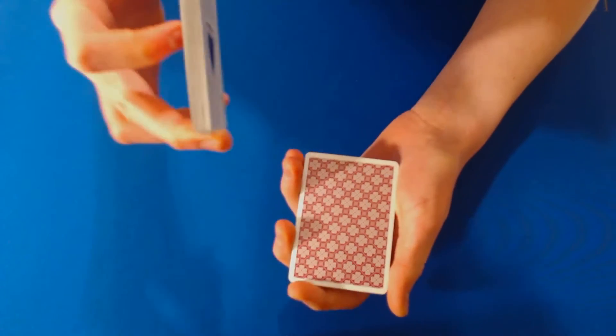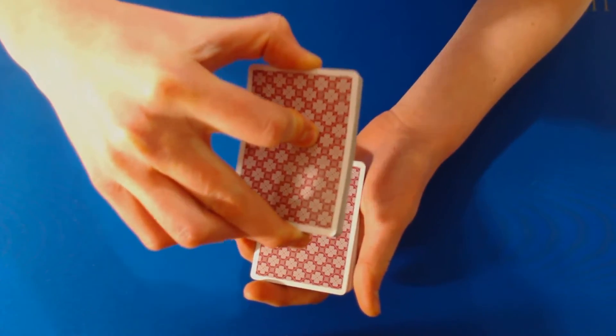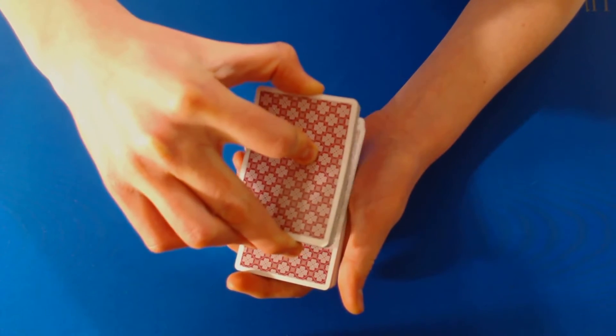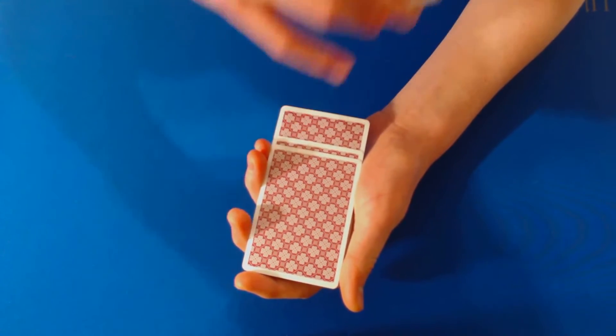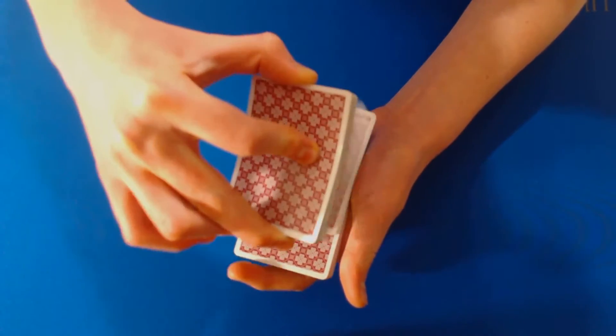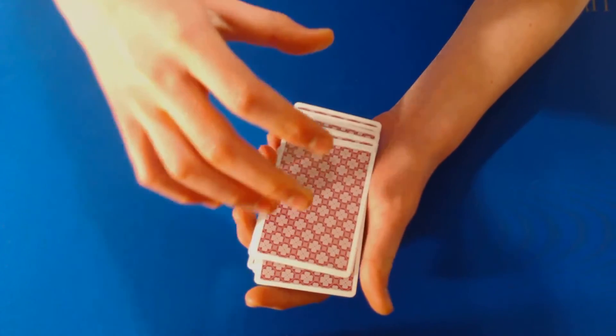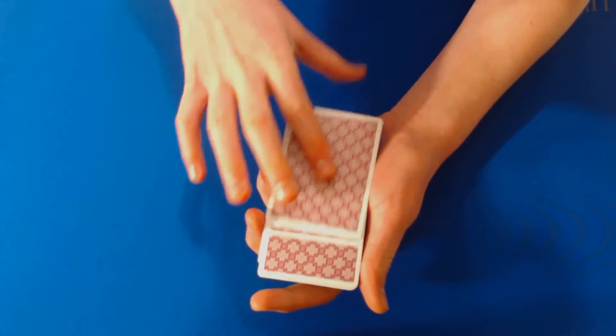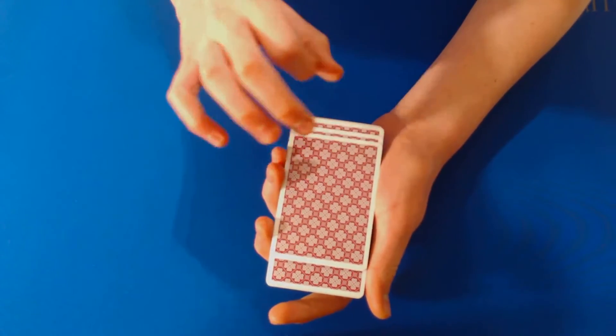But what you're actually doing, you're not getting a pinky break. You're going to just dribble the cards, out-jogging a couple first in the back. Notice right there. So the first card is going to be out-jogged and then just kind of make a sloppy mess of your dribble so people kind of don't know, oh there's cards out front, out back.